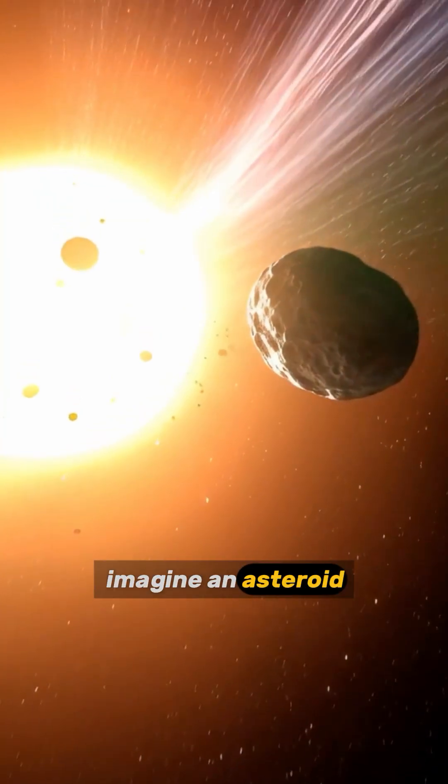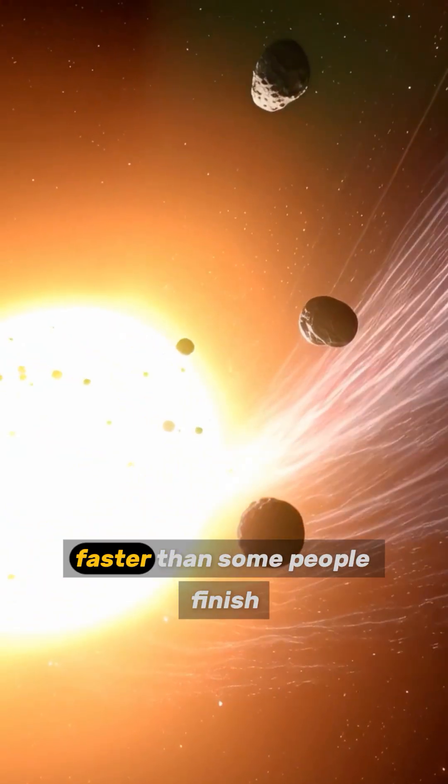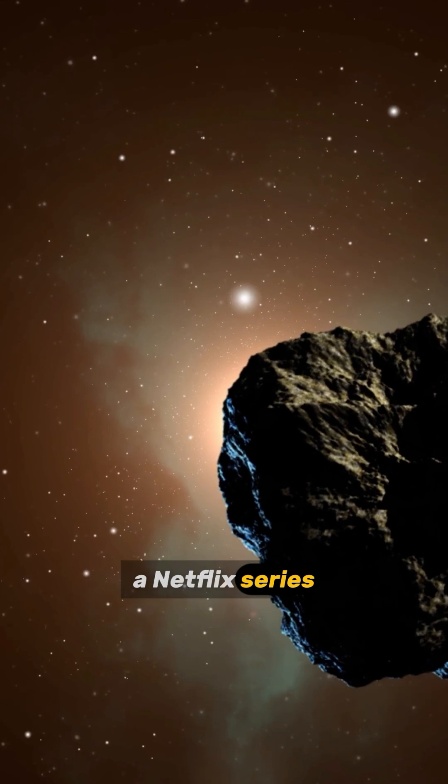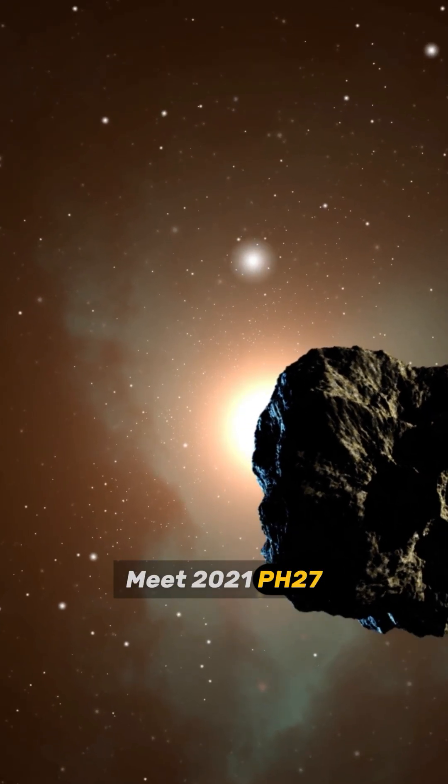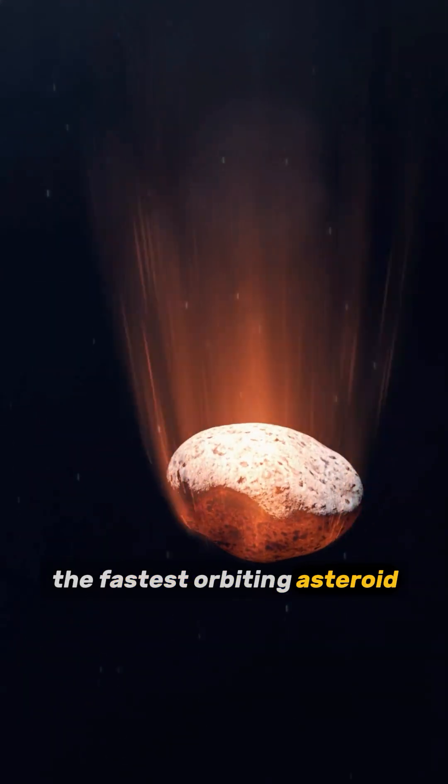Imagine an asteroid so close to the sun it completes an entire orbit faster than some people finish a Netflix series. Meet 2021 PH-27, the fastest orbiting asteroid ever discovered.